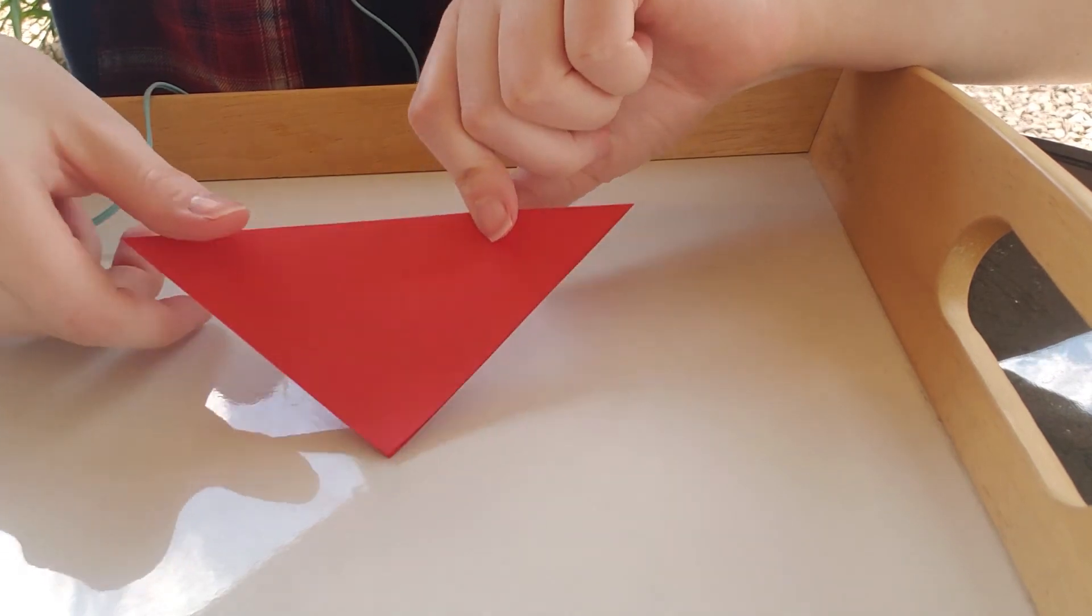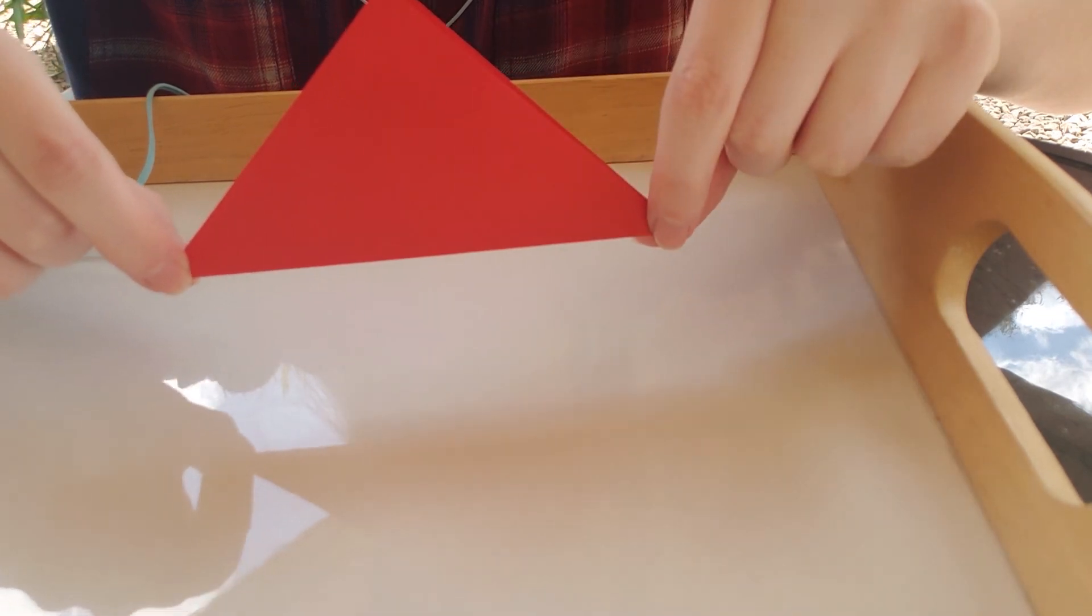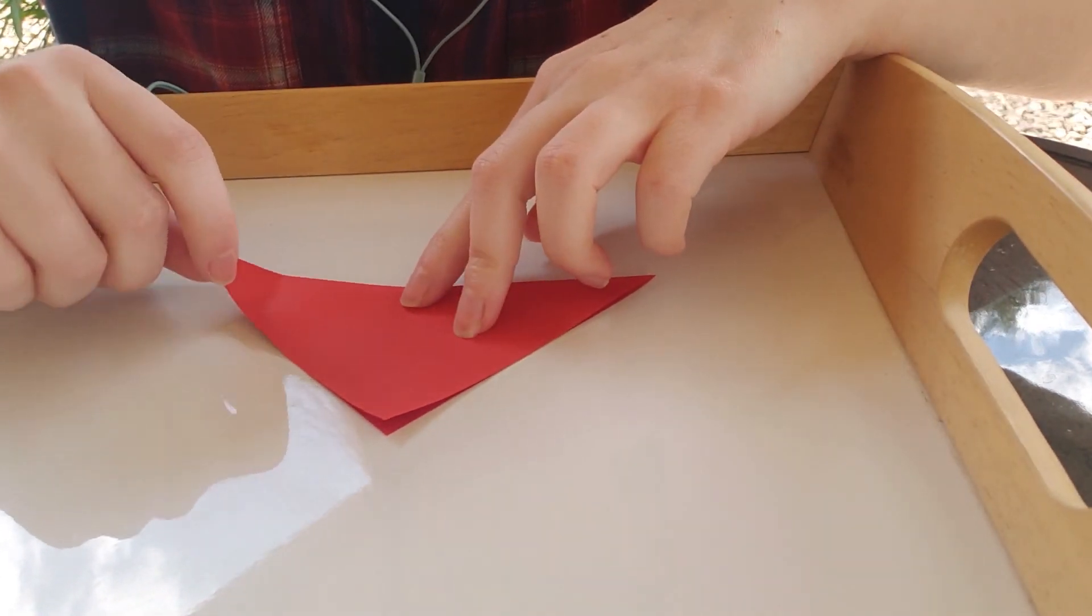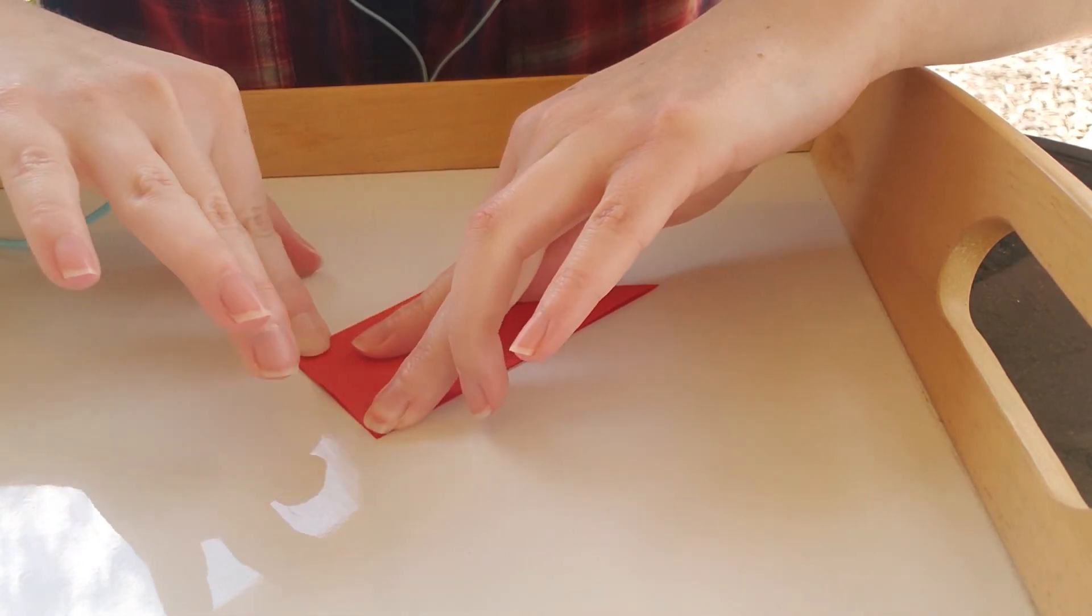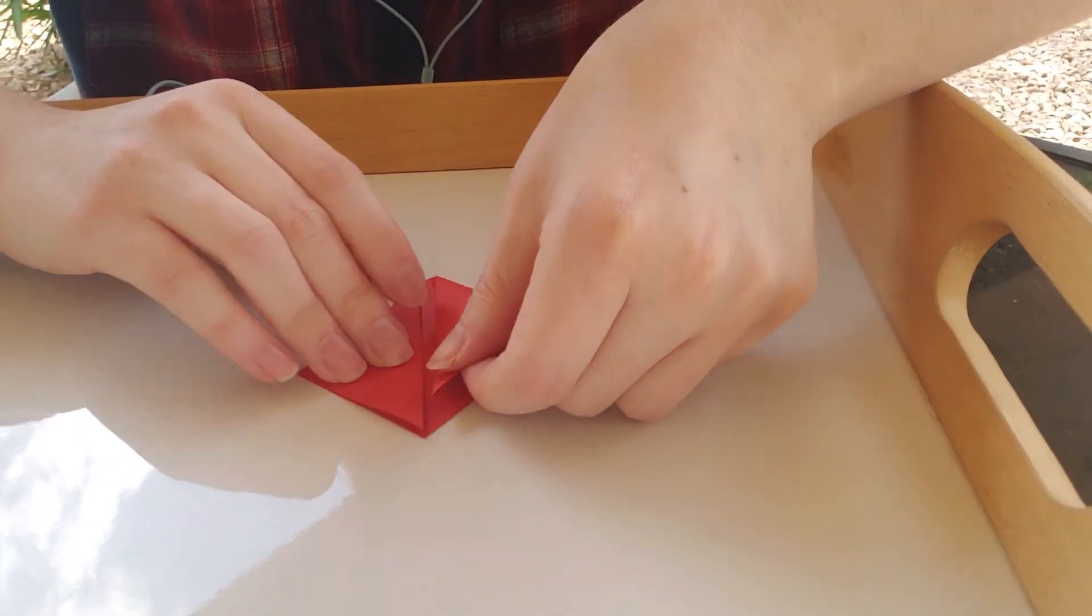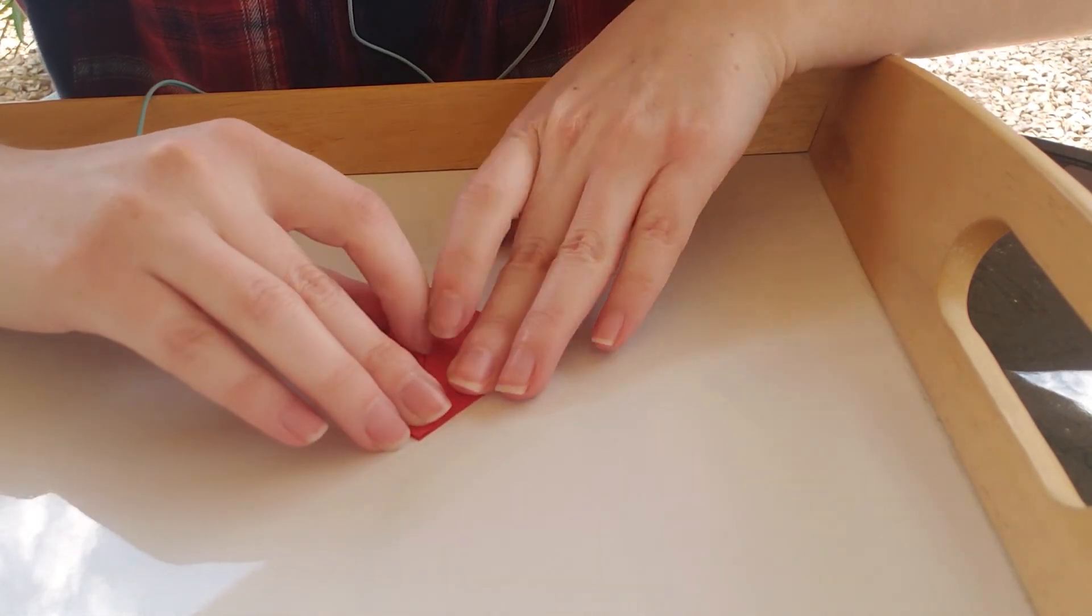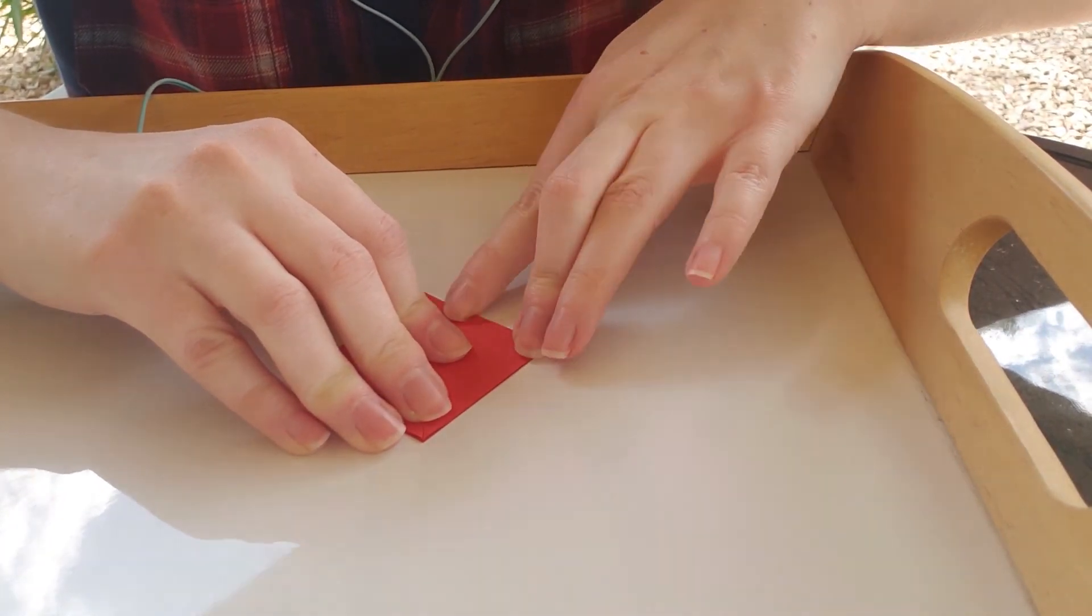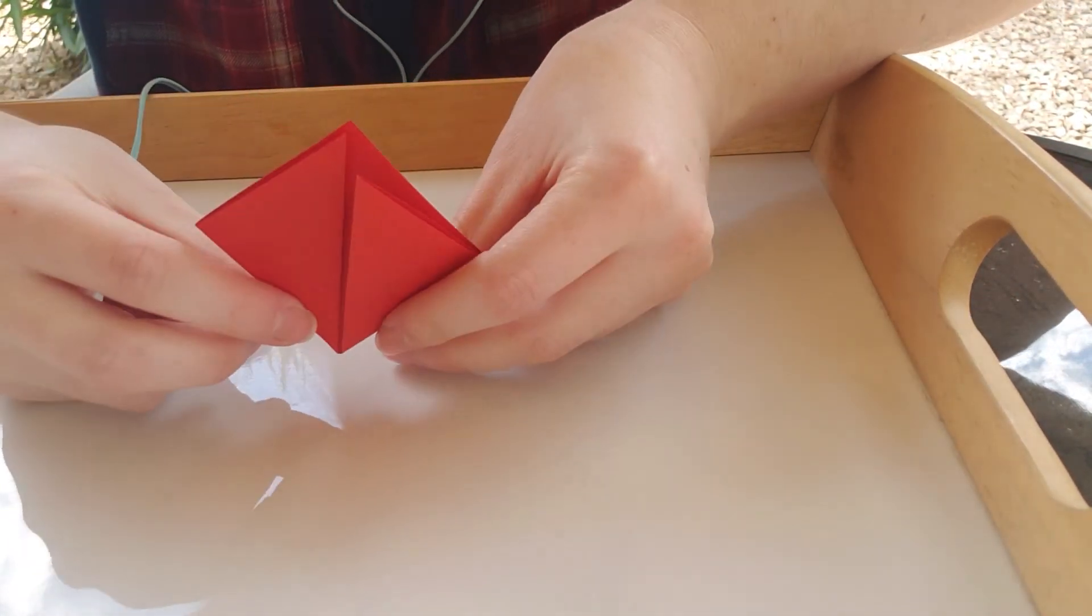Okay, so now we have our triangle and our next step is going to be to bring these two points up to this top corner. So I'm going to grab one, bring it up and then get that crisp line again, and bring up my other side and fold that down as nice as you can so you get this little diamond shape.